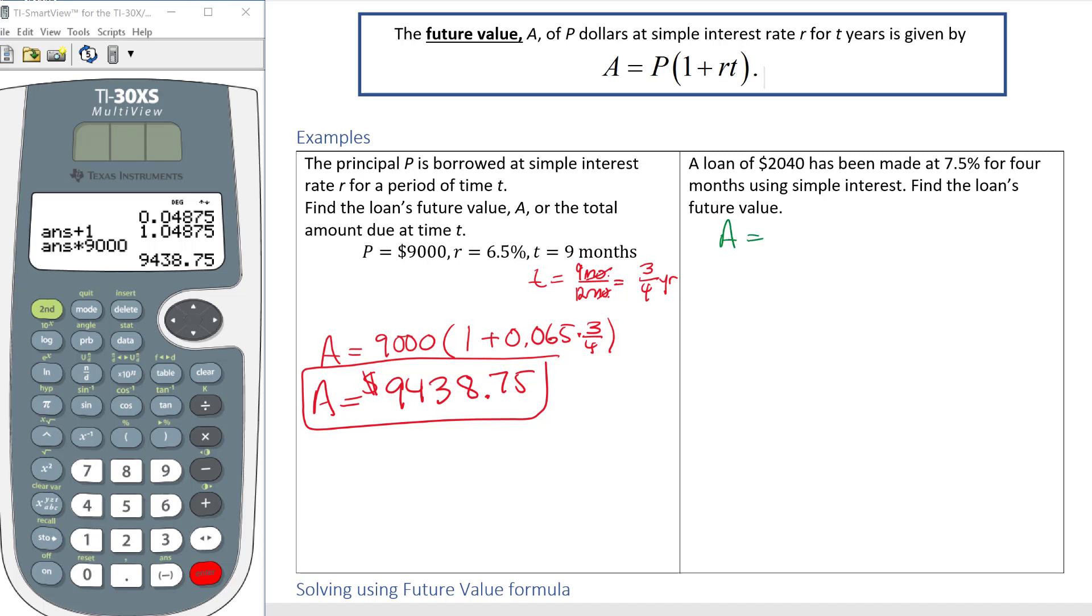So this time I'm going to have to figure out what my A, my P, my R, and my T are using the words. So a loan has been made, so I'm starting with 2,040 which is my P, it's my present value, at a rate of 7.5% so that's 0.075 for my rate, for four months. Four months out of 12 months, if I reduce that, that gets one-third of a year. So my T is going to be one-third.